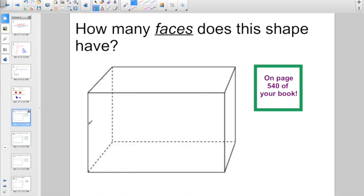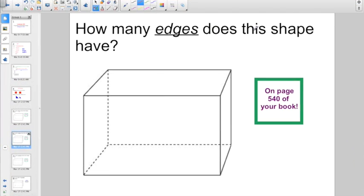The tricky part, kids forget, is adding on the top wall or face and the bottom wall or face. So, if we're counting faces, there would be six faces on this rectangular prism.